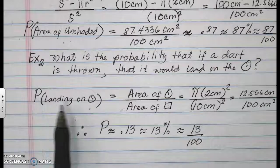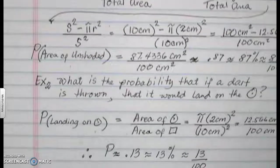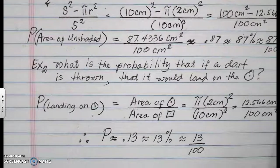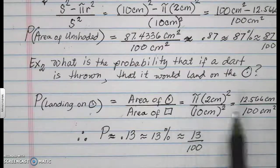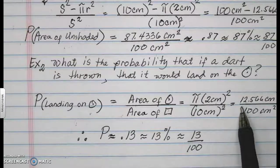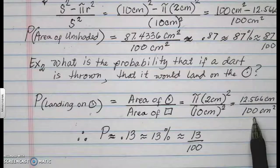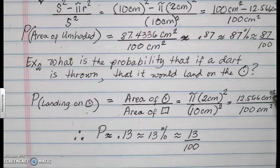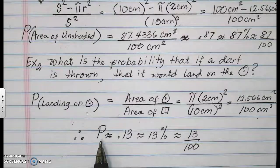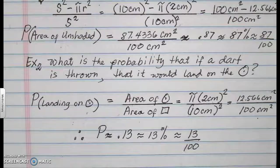The probability of the dart landing on the circle is going to be expressed in the formula of area of the circle over the overall area of the square. πr² over s² will give you 12.566 approximately centimeters squared. For the area of the square, it is 100 cm². These two will cancel out and approximately your probability is 0.13 or 13% or 13 over 100.